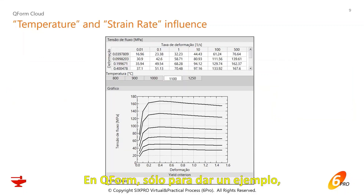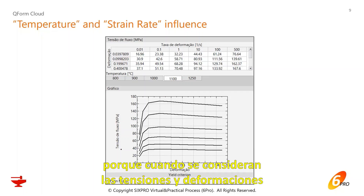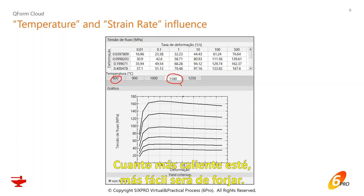Just to give an example, the material data is very important. When you consider stresses and strains, they are based on temperature. So if you have a material at 800°C or 1100°C, the material behaves differently. The hotter it is, the easier it will be to forge, and the press loads are going to be lower.